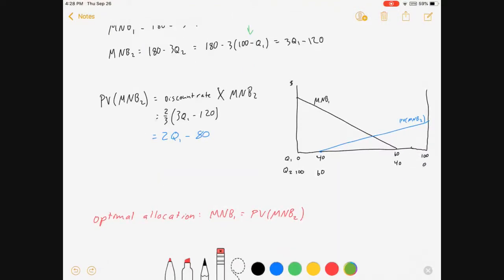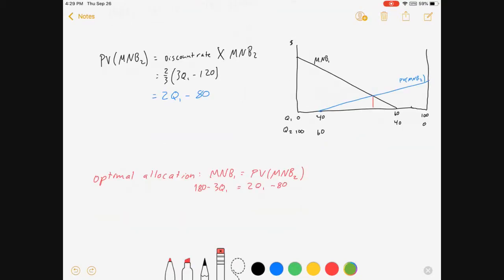So with all this in mind, how do we find the optimal allocation where we get the most benefits for society across time periods? And we get that by setting the marginal net benefits in period 1 equals present value of MNB2. So 180 minus 3Q1 equals 2Q1 minus 80. And that means 5Q1 is 260, which means Q1 is 52. Boom. We know the Q1 where that happens. Also, use our resource constraint. 100 minus Q1 is equal to Q2. So it's 100 minus 52 equals 48. And that's Q2.